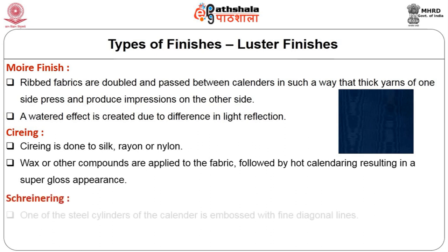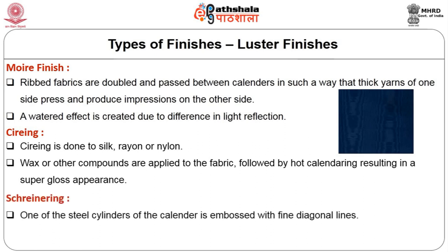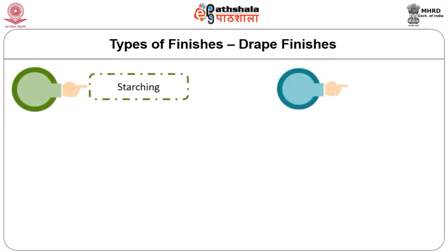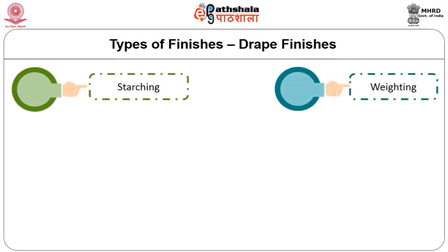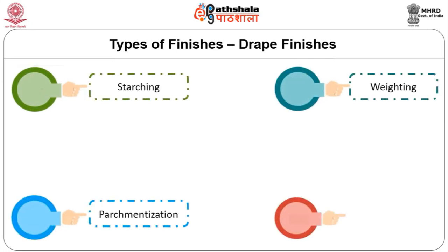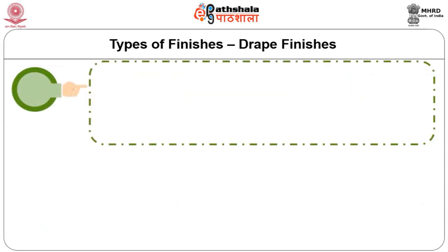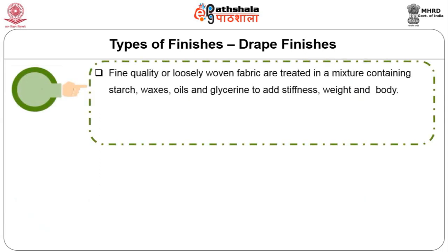In schreiner calendaring, one of the steel cylinders is embossed with fine diagonal lines, producing smooth fabrics with soft lustre. Some of the drape finishes are starching, weighting, parchmentization and burnt out finish. Starching is otherwise called a stiffening finish — fine quality or loosely woven fabrics are treated in a mixture containing starch, waxes, oils and glycerin.